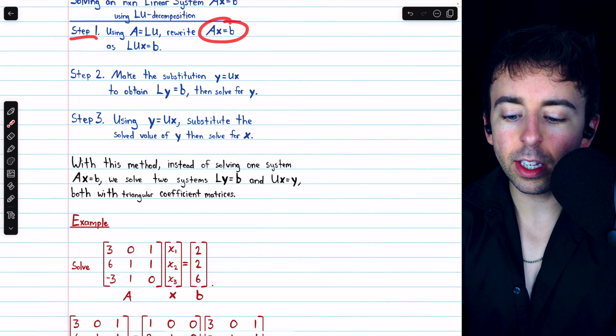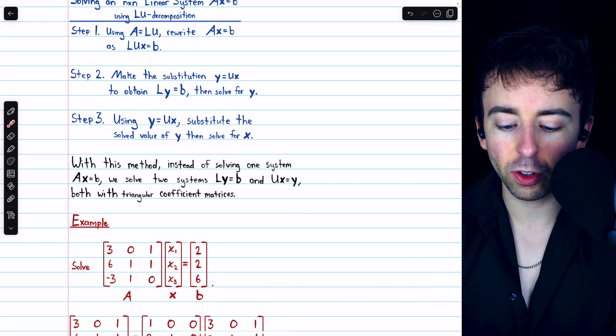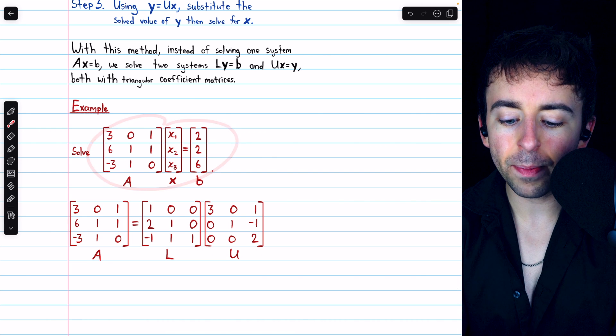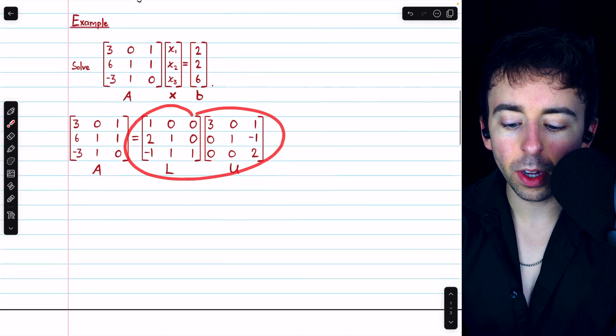Step one is to rewrite the equation AX equals B using our LU decomposition. So here's the equation AX equals B, and what we'll do is replace A with L times U.